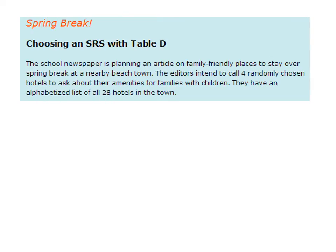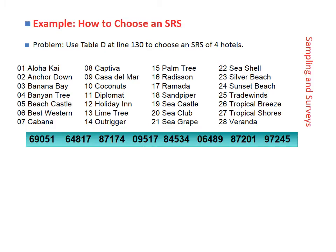Here is an example from your textbook. For spring break, the school newspaper is planning an article on family-friendly places to stay at a nearby beach town. The editors intend to call four randomly chosen hotels to ask about their amenities for families with children. They have an alphabetized list of all 28 hotels in the town.